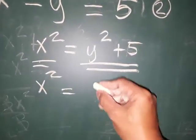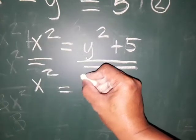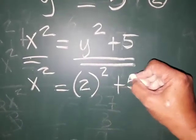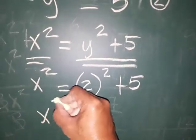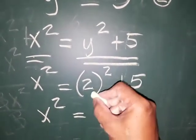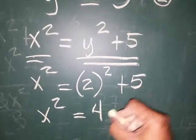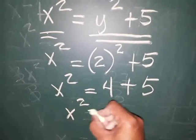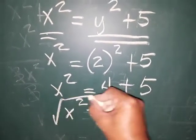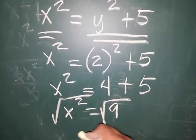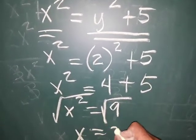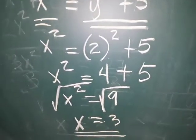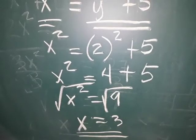Copy: x squared is equal to y squared plus 5, with y equal to 2. So x squared equals 2 squared plus 5. Then x squared is equal to 2 times 2, which is 4, plus 5. So x squared is equal to 9. Take the square root of both sides, and x is equal to 3. The same answers as in our elimination method.